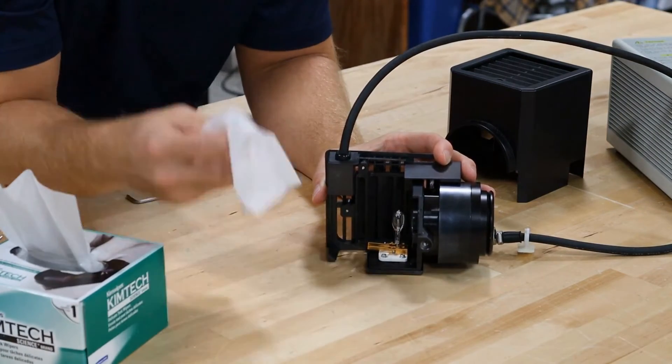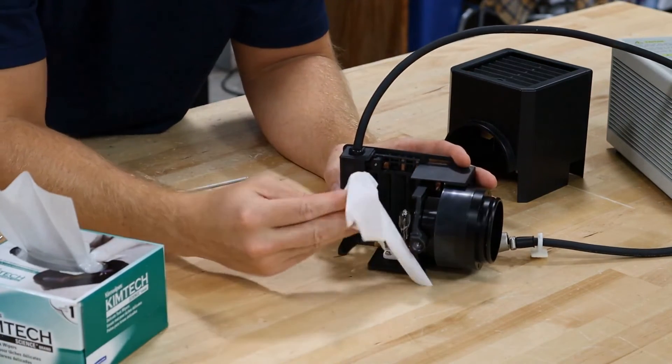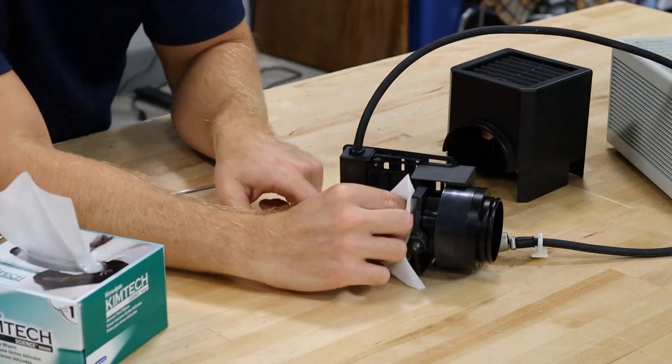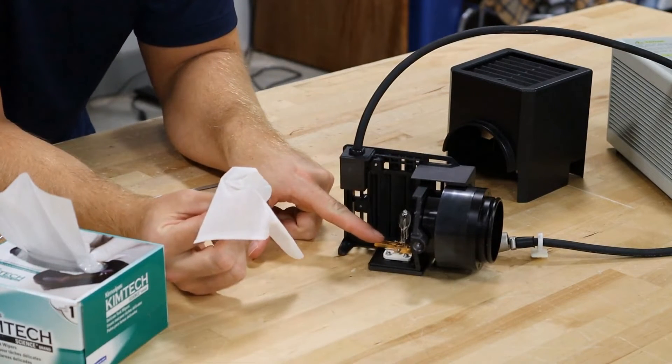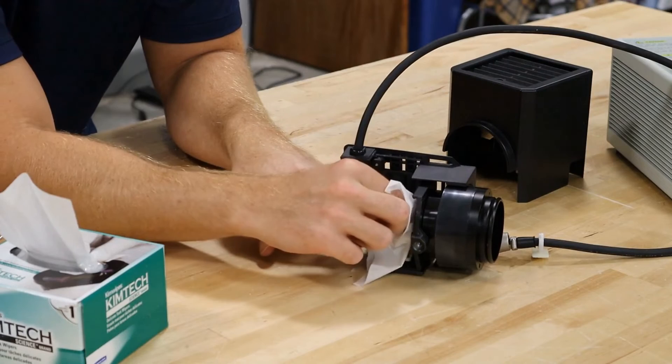Here you're going to see Chad point out the two little spring levers you need to push down in order to remove the bulb. Just push those down with a little bit of pressure, then grab the bulb with your chem wipe and pull straight up and the bulb will come out.